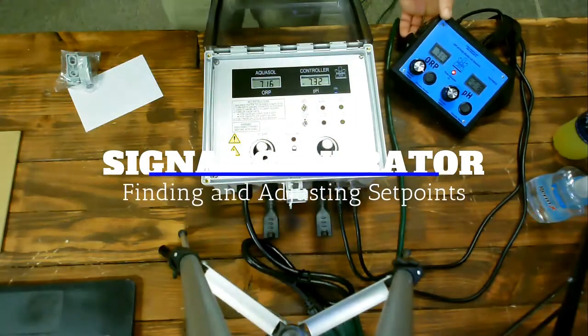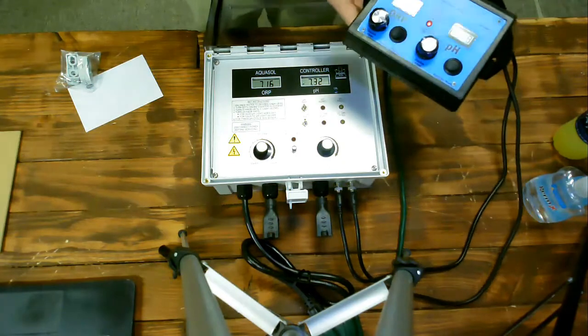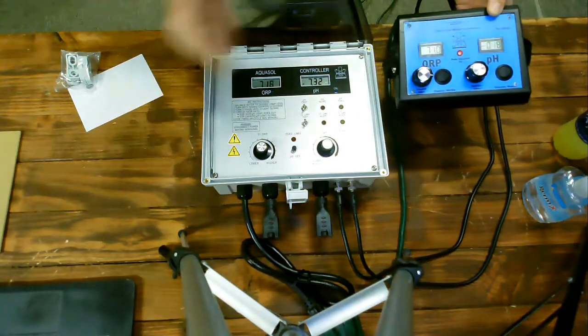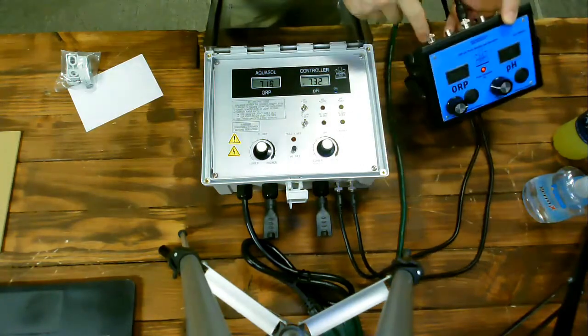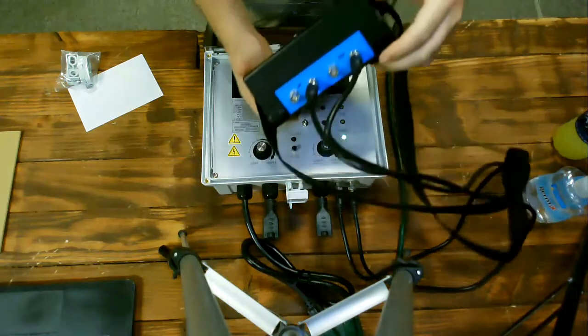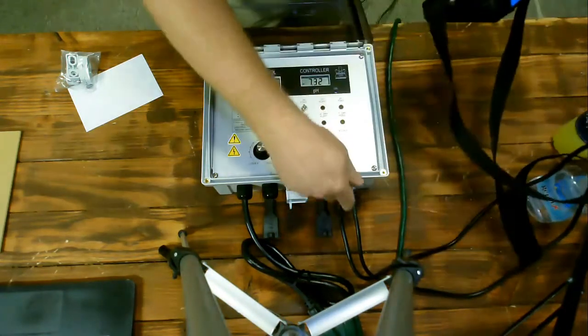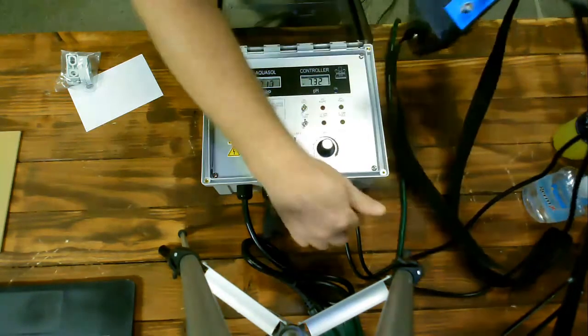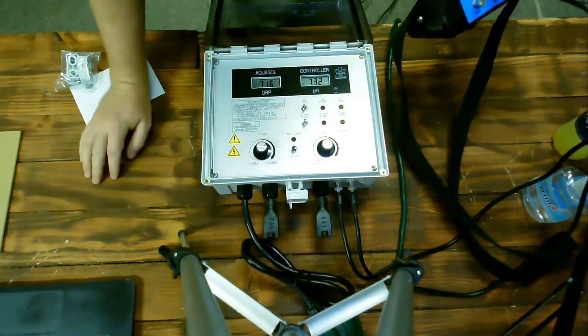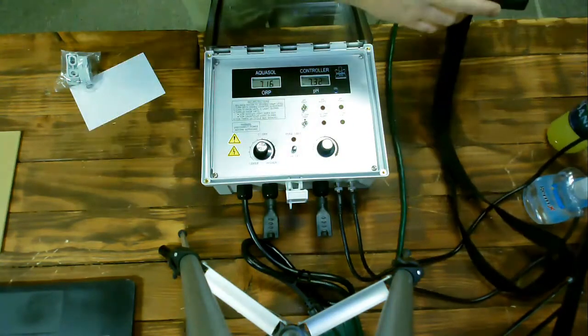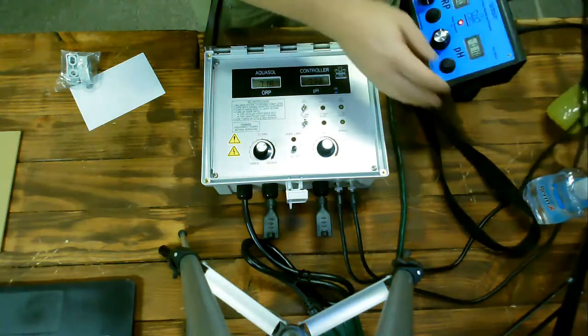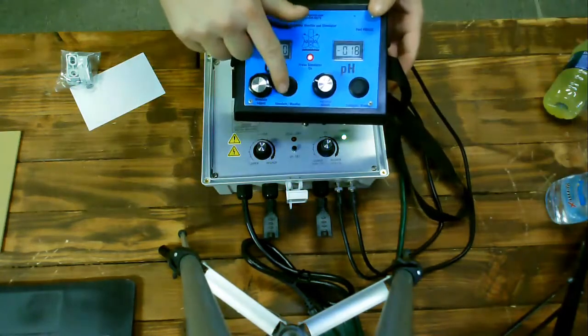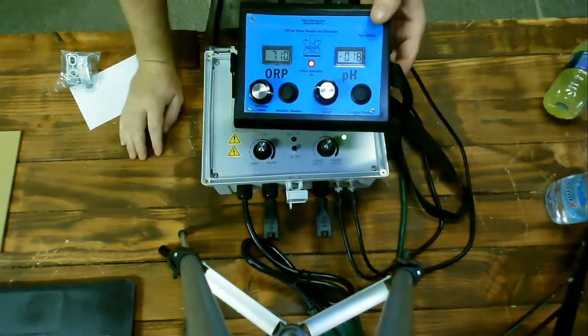First, we will be discussing how to use the Aquasol millivolt signal generator to determine the set points on a controller. The first step is to make sure that the signal generator is powered on by selecting both of the power switches on either side of the unit, and then making sure that the pH output cable is connected to the pH BNC on the controller, as well as the ORP output on the ORP BNC for the controller. We then make sure that both of the selector switches on the front of the signal generator are set to simulate. This will allow us to send a millivolt signal to the controller.